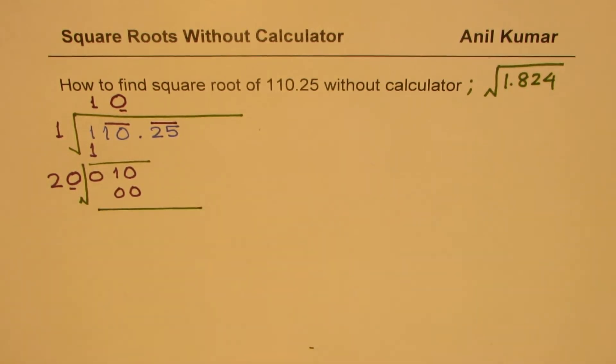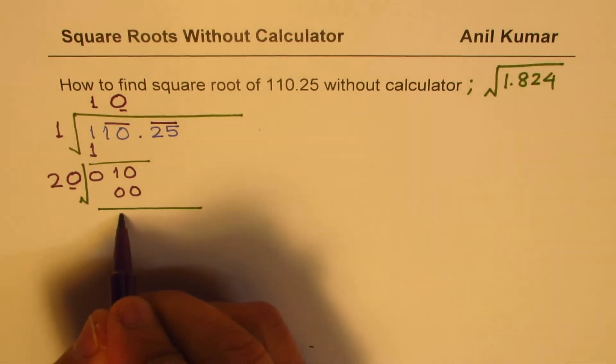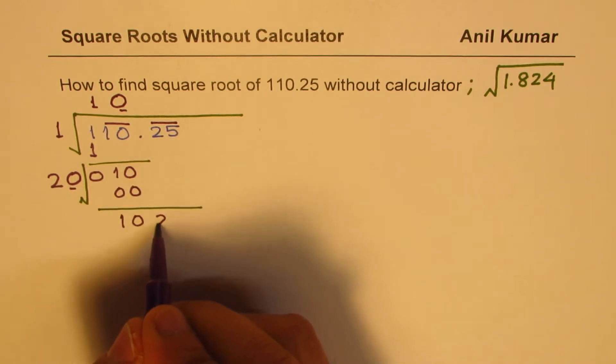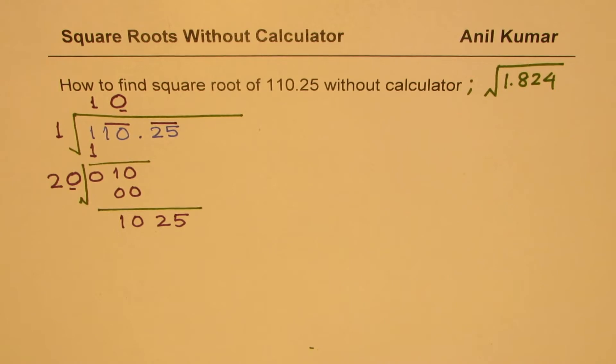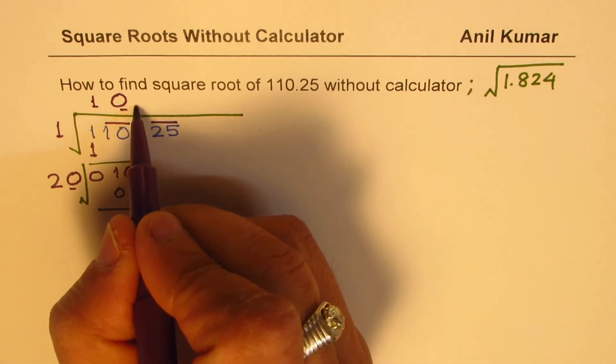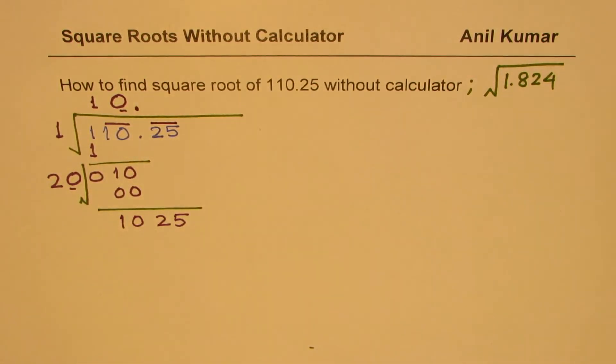So writing 0 here gives me 0 times 20 which is 0. Now when you take away 0 from 10, you get 10. So bring down 10 here. And now copy the next two digits which are 25.